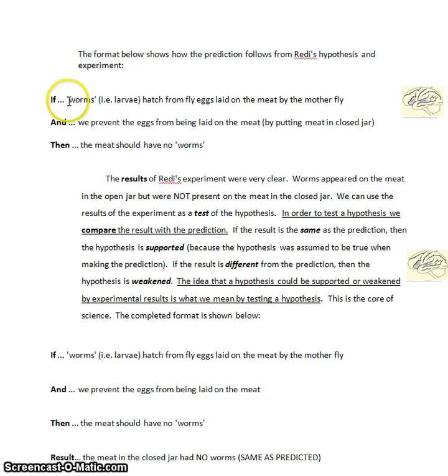If the worms, that is the larvae, hatch from fly eggs laid on the meat by the mother fly, that's the hypothesis, that it's the flies that are causing worms to appear. So A causing B. It's a typical hypothesis. The and is the experiment. We prevent the eggs from being laid on the meat by putting the meat in a closed jar. So notice that's our experiment. In fact, we're setting up a control condition in our experiment. We already have the open jar. We already know what happens there.